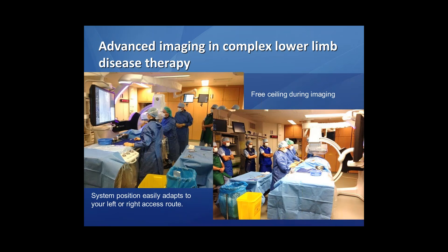As you can see, there is a free ceiling during the imaging and we have free space. We can very easily switch from the right side of the patient to the left access. It just asks for a little bit of organization in your cath lab or hybrid room — for instance, collecting all right-side accesses in the morning and left-side accesses in the afternoon — to make it comfortable to work from each side of the table.